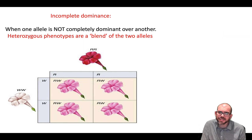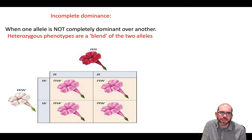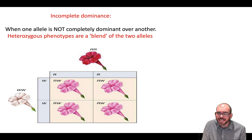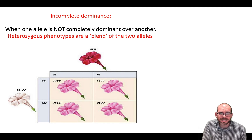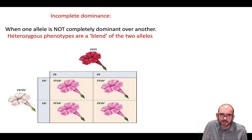Instances like this, where you have a unique third phenotype, is called incomplete dominance. This is when neither allele is completely dominant over the other. Instead, the heterozygote produces a blend of the two alleles.